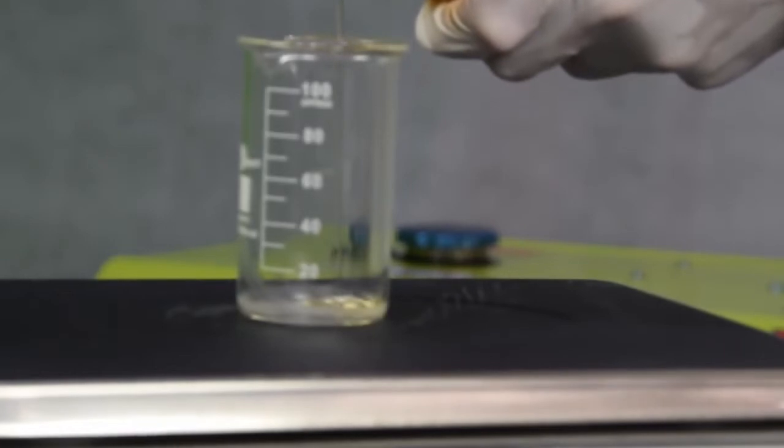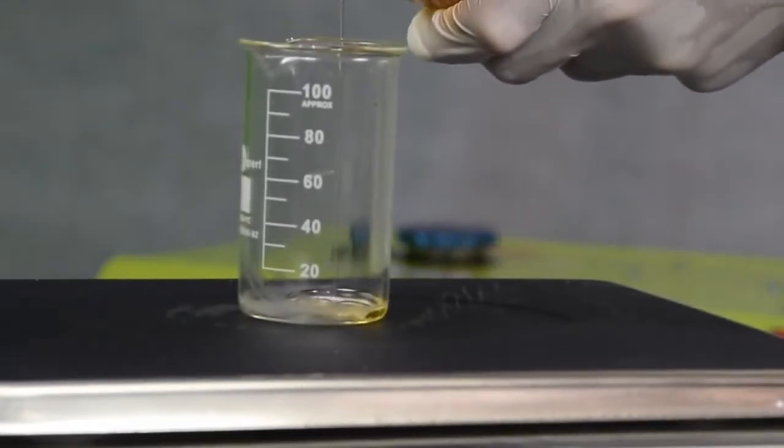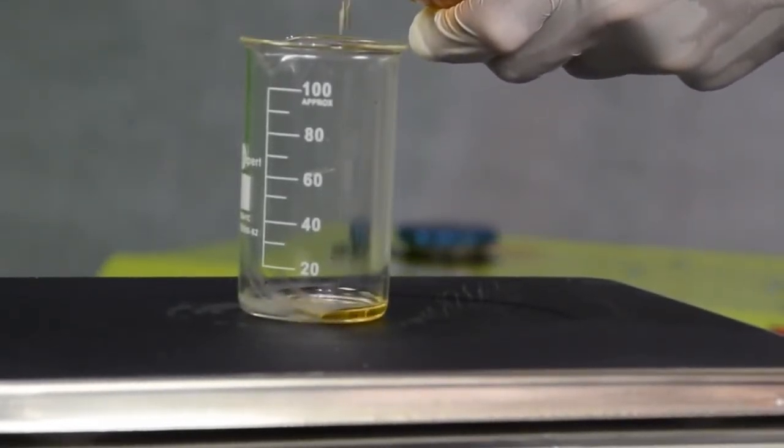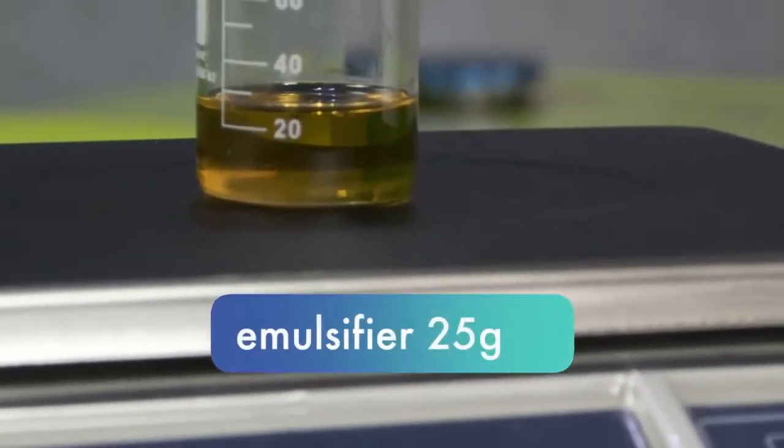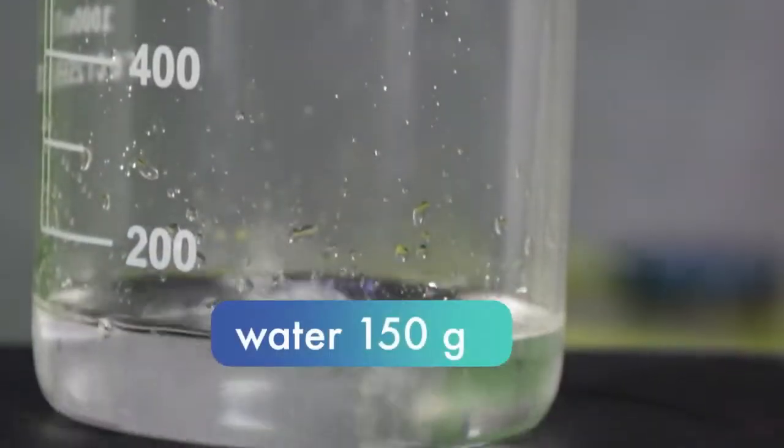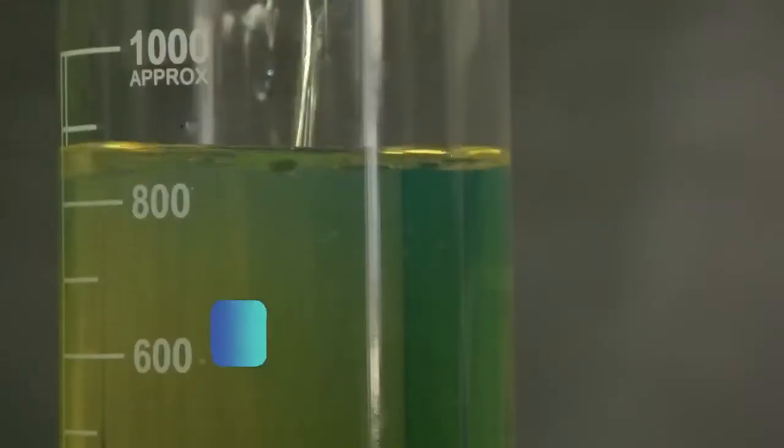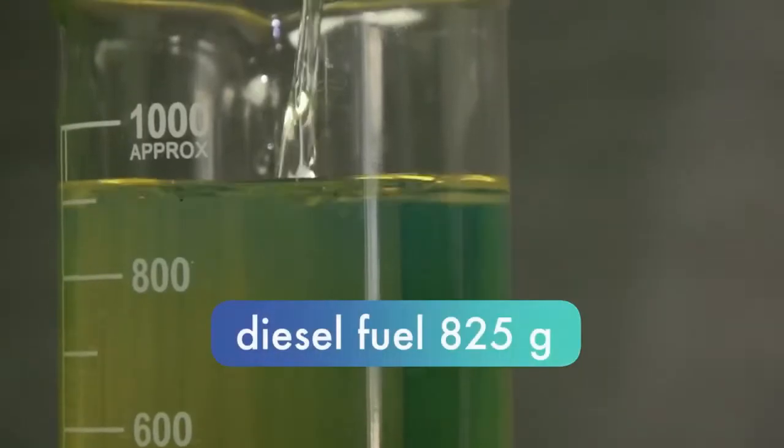The results of the experiments demonstrated the optimal emulsion composition. To make 1 kg of emulsion, we need 25 grams of emulsifier, which constitutes 2.5% of the total volume, 150 grams of water, that is 15% of the volume, and 825 grams of diesel.